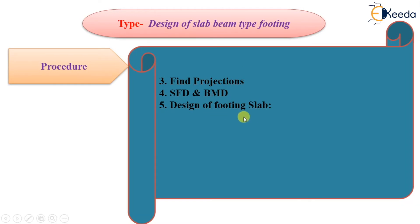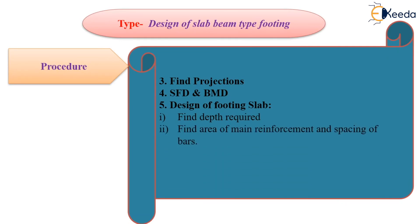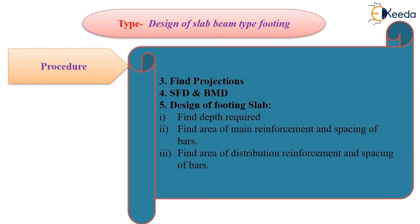Firstly, we will design the footing slab. For that, we have to compute the depth required for the footing slab. We have to equate the equation Mu and Mu limit, and from that we can find out the depth required. After that, we will find out the main reinforcement required, that is the area of steel. After putting all the values in the formula, we can easily find out the area of main reinforcement. By assuming a suitable diameter of bar, we can also find out the spacing of main reinforcement. Similarly, after that, we have to find out the area of distribution steel, and then we will find out the spacing of distribution steel.